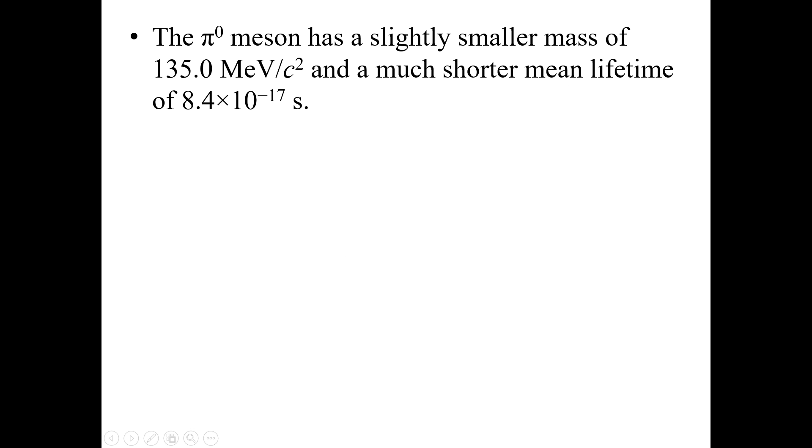The pi naught or neutral meson has a slightly smaller mass of 135.0 MeV/c² and a much shorter mean lifetime of 8.4×10⁻¹⁷ seconds. This pion decays in an electromagnetic process.